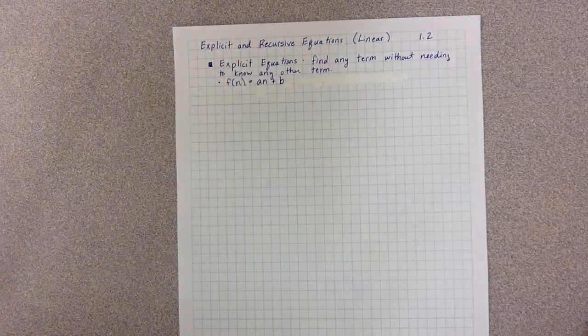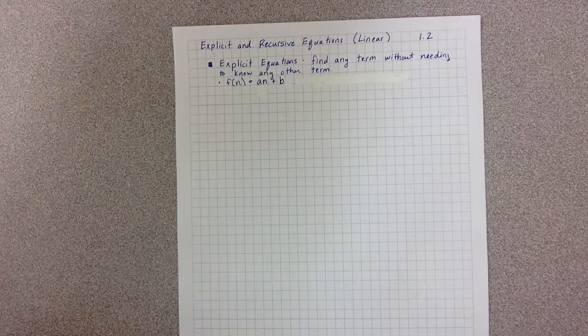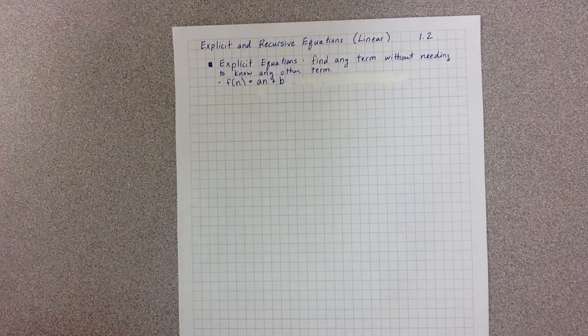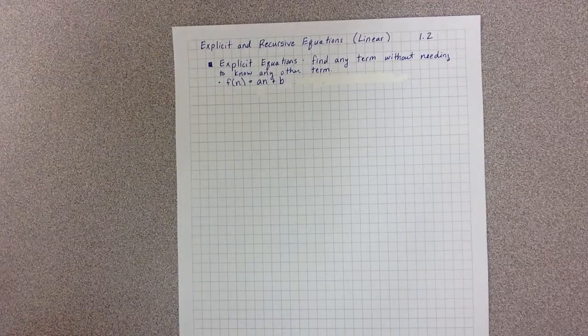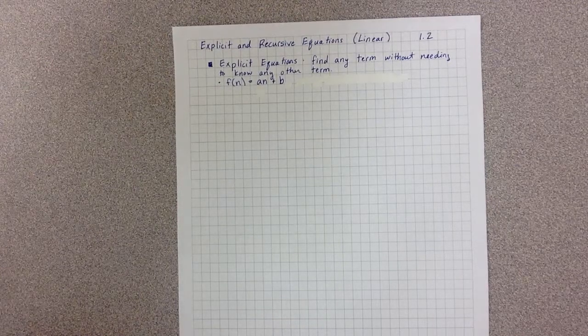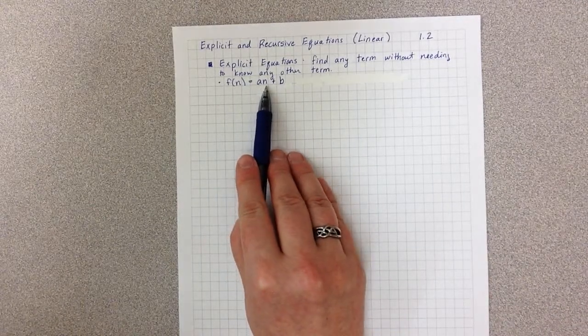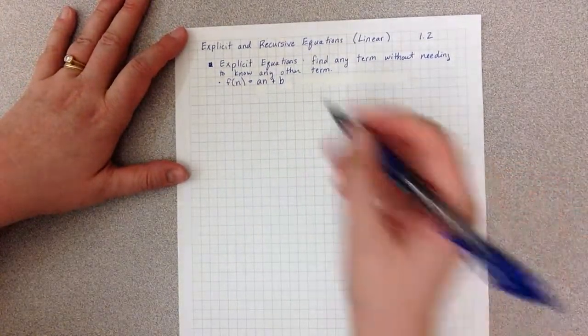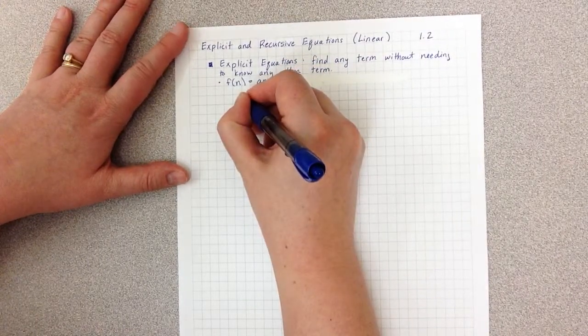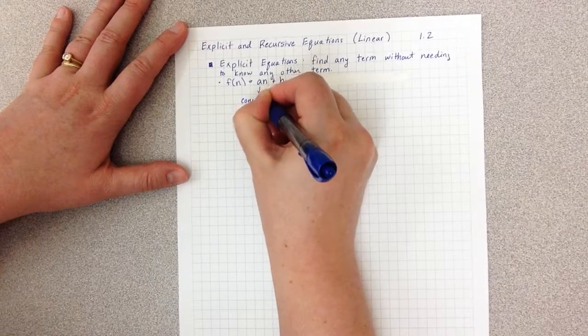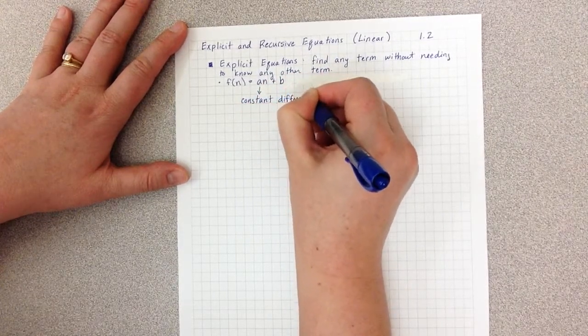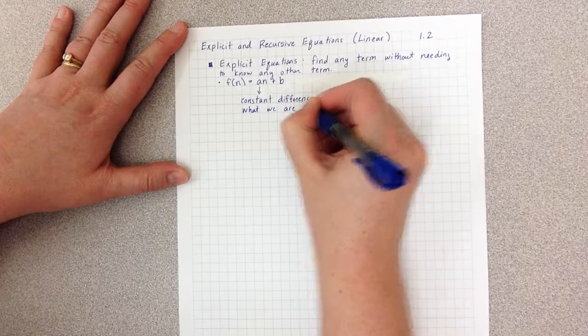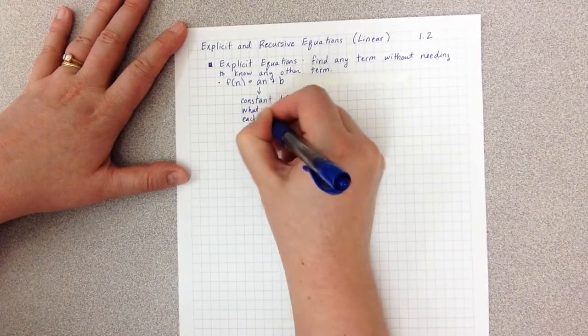First, we'll deal with explicit equations. Explicit equations are equations where we can find any term without needing to know any other term. The linear explicit equations are often written in the form f(n) equals an plus b. The letter a represents the constant difference, meaning what we are adding each time.